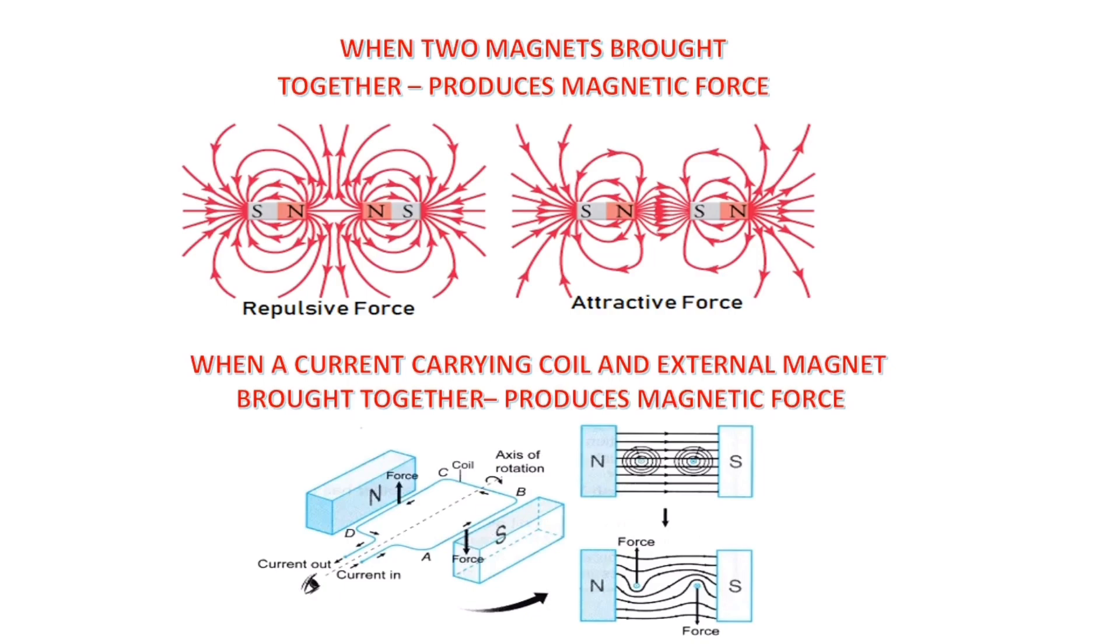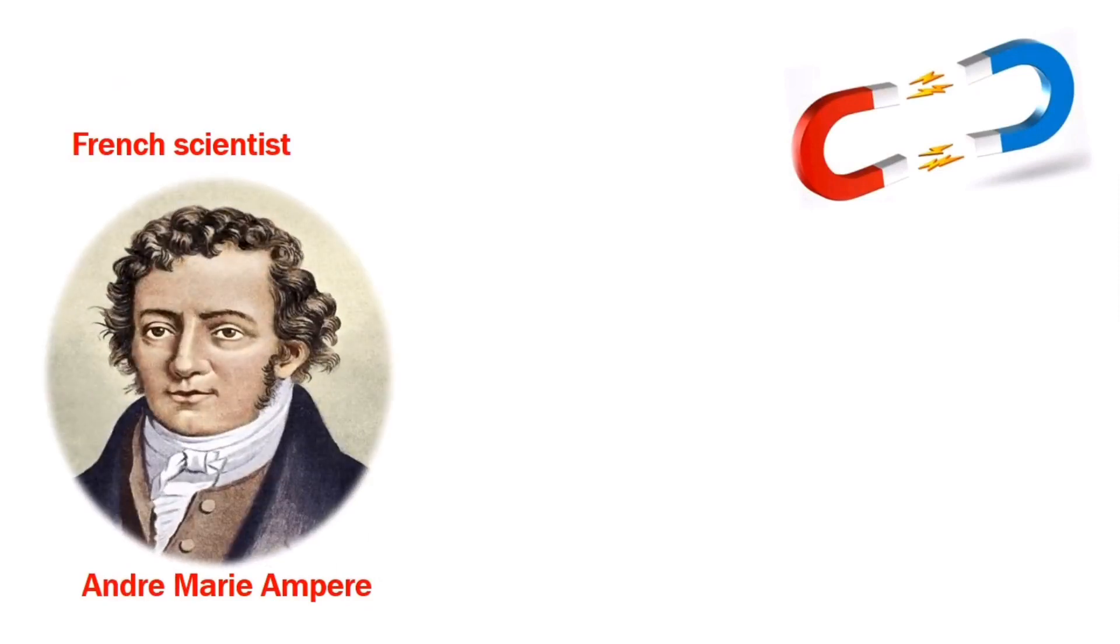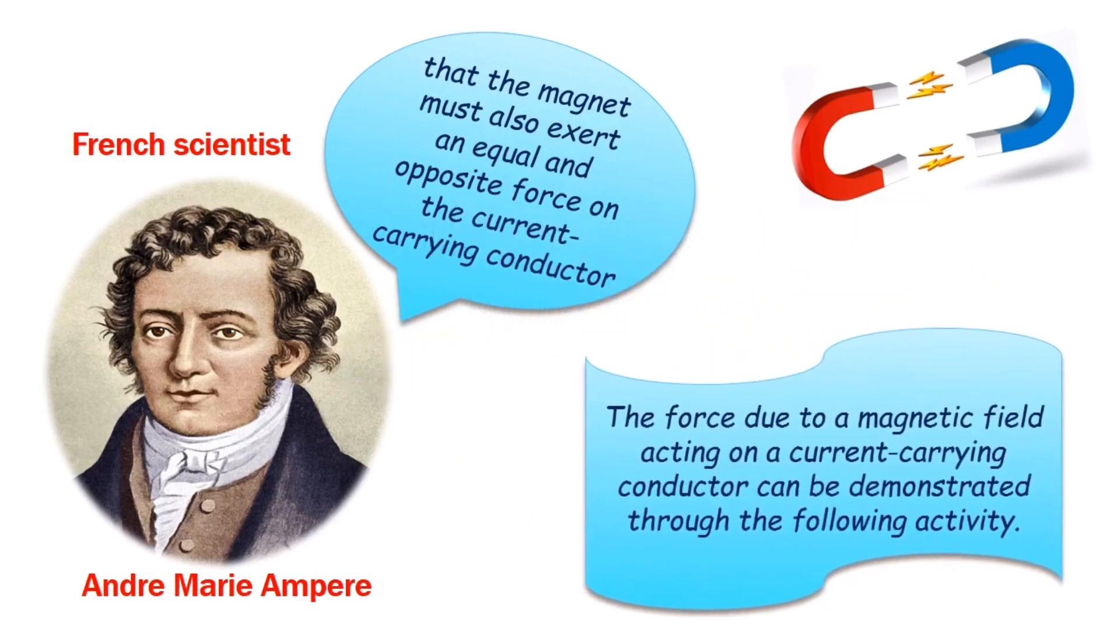This was proved experimentally by a French scientist, André-Marie Ampère. He suggested that the magnet must also exert an equal and opposite force on the current carrying conductor. This force due to the magnetic field acting on a current carrying conductor can be demonstrated through the following activity.